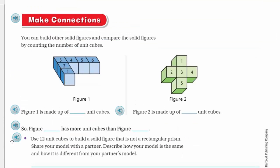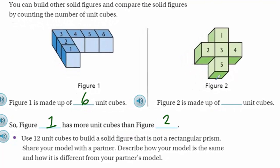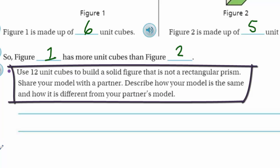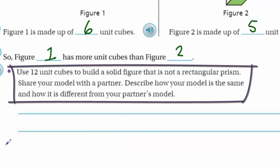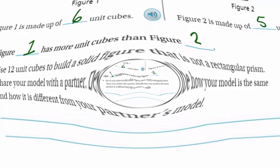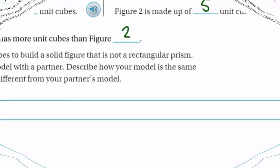Now it's time to make connections. You can build other solid figures and compare them by counting the number of unit cubes. Figure one is made up of six unit cubes, so figure one has more unit cubes than figure two, which has five. Now use 12 unit cubes to build a solid figure that is not a rectangular prism. Share your model with your partner and describe how your models are the same and different.